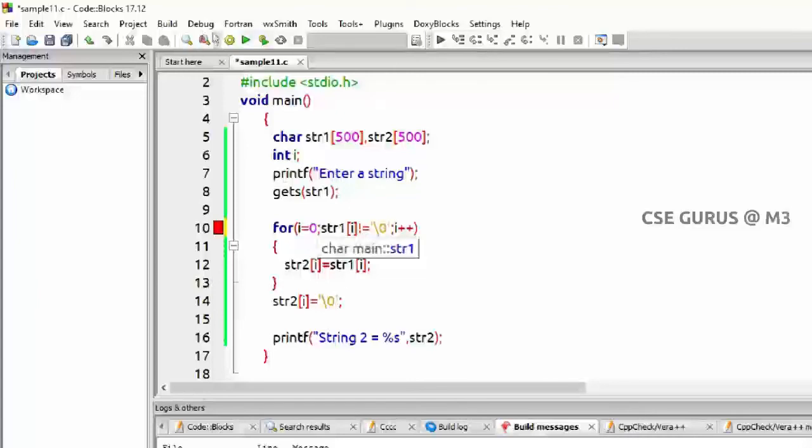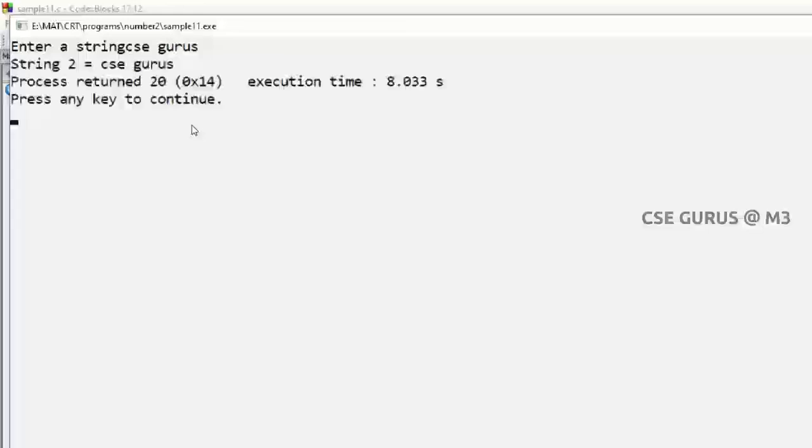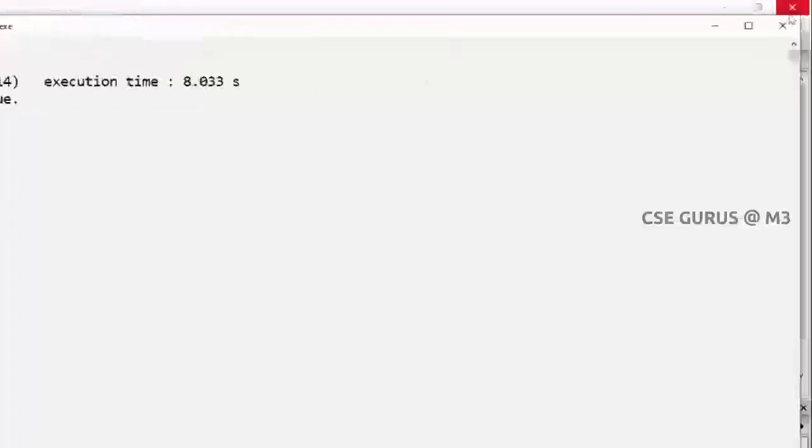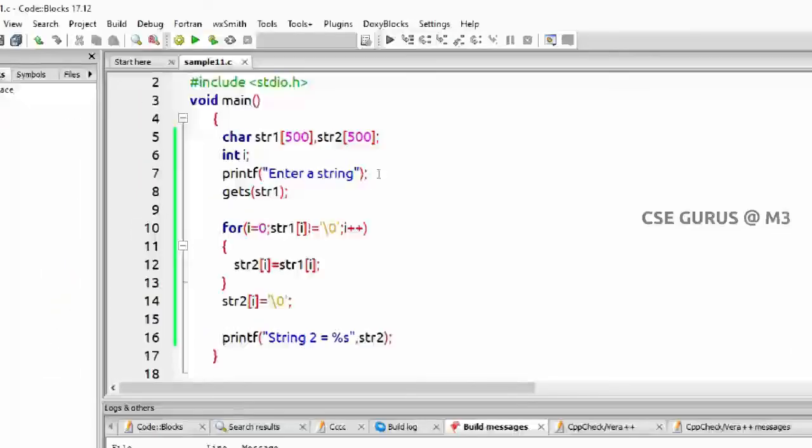We'll see the execution now. Enter a string, I'll enter something like same like csgurus with some space I have given. We'll see what is there in string 2: again csgurus. Of course in string 1 also it will be, why? Because it is a copy, it's not cut paste, it's copy. You can see the same thing you get in string 2 also. So like these simple codes you can write. We'll move on to the next one.